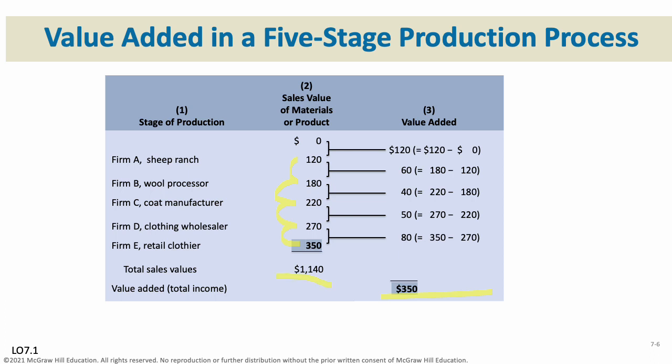The total sales values across all stages are not part of GDP — that's just everything that happens to make the product. Its impact on GDP is only its final cost. The value-added approach: wool sheared off the sheep was $120, processed into wool thread $180, stitched adding $20, sold to wholesaler $270, then to retailer $350 — that's its final price. GDP can never involve multiple counting; it's only the final value of a product once it is put on sale.